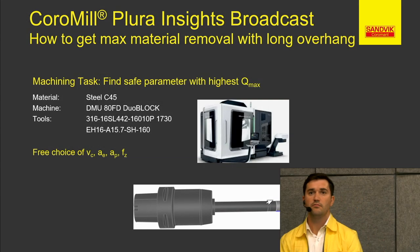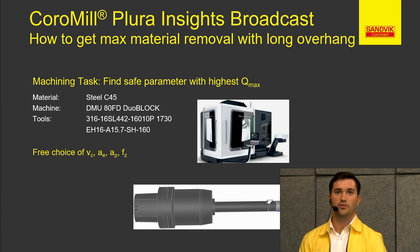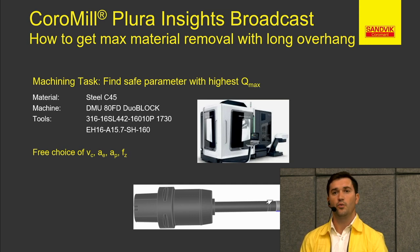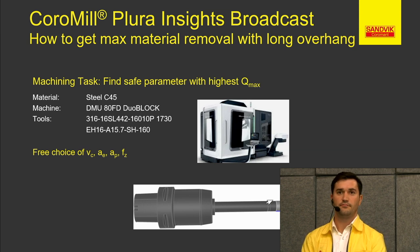Now, we will try to see an example where we are using a long overhang tool with a heavier metal shank. We will try different strategies to see which one will give us the best possible machining removal rate and explain it after. Let's see the examples now.